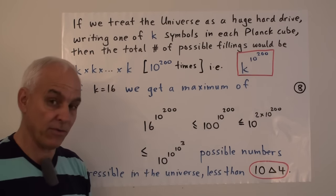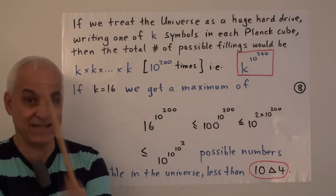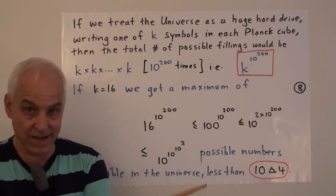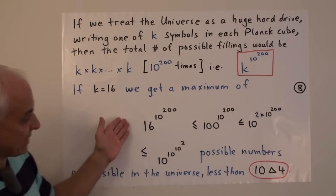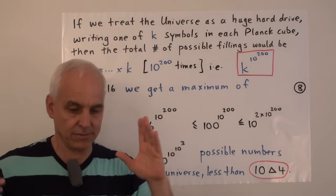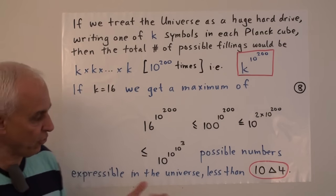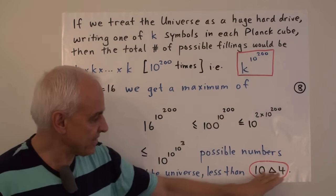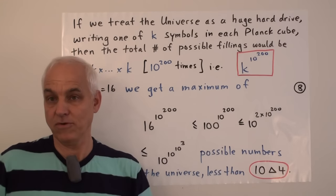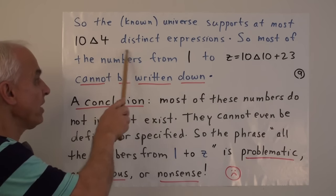That's 10^(10^(10^3)), which is bigger than 10▲3 but nowhere near 10▲4. For 10▲4 we'd need 10^10 — ten billion — as the exponent instead of 1000. So the total number of words in our universe, treated as a Planck-scale hard drive, is less than 10▲4. This is very crude, but it's why I think of 10▲4 as being commensurable with the amount of complexity possible in our universe. Our known universe supports at most 10▲4 distinct expressions.